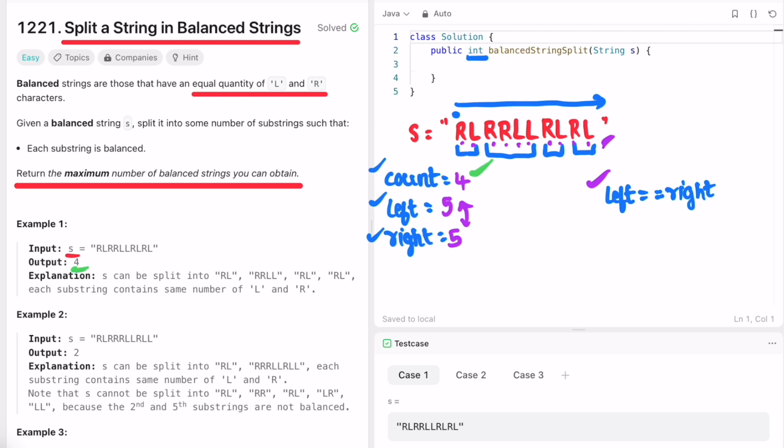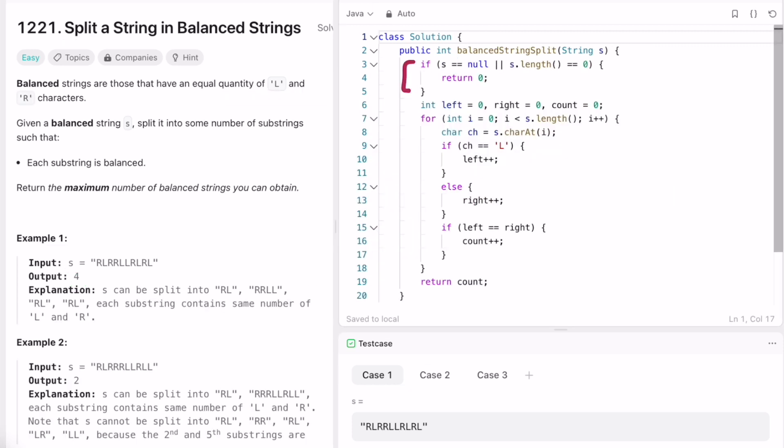And finally we reach the end of the string, and whatever is present inside count will be our output. So four is our output. Now let's take a look at the code. So first we are doing a base check: the input is null or the length of the input string s is zero. If it is so, we return zero because we can't find any balanced strings inside it. And now we are declaring the three variables left, right, and count, and all three are initially initialized to zero.